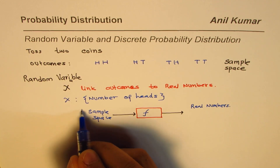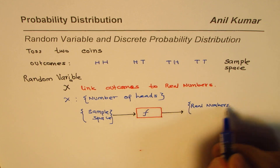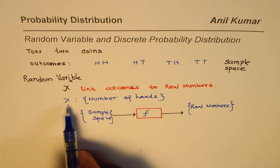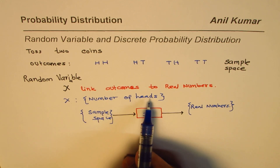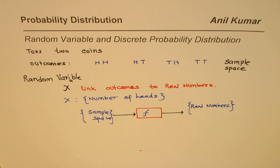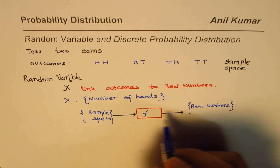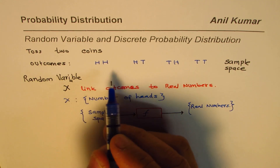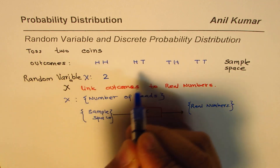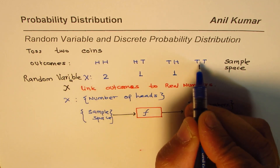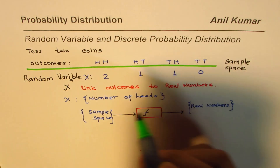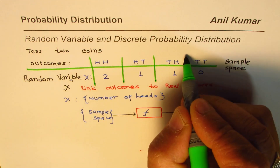The output depends on the random variable or random function we have defined. In our case we are counting number of heads, so the sample space includes all the outcomes. We count heads: two heads maps to 2, one head maps to 1, zero heads maps to 0. We have linked all the outcomes with numbers.